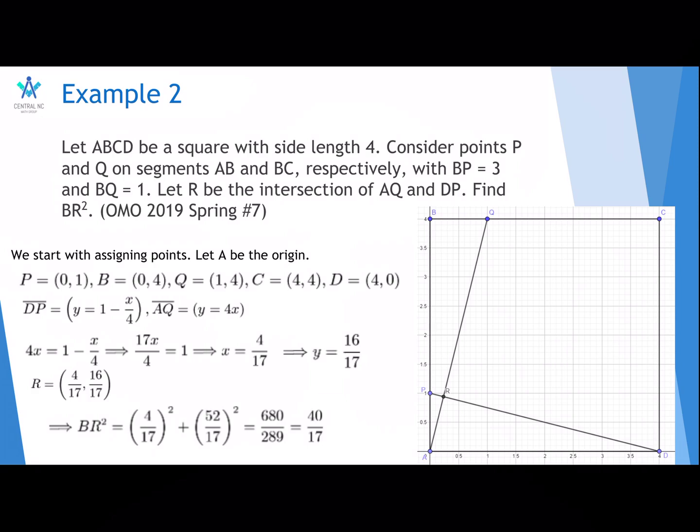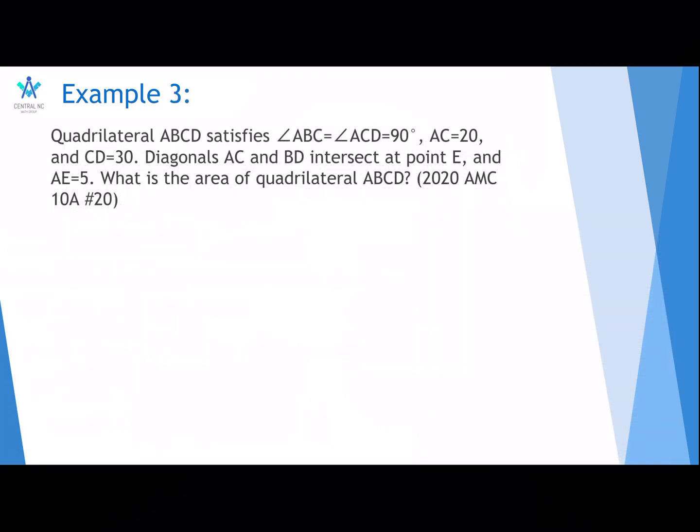So, the point R has the coordinates (4/17, 16/17). So, BR squared, you use distance formula squared, so you get 4/17 squared times 68 minus 16, which is 52/17 squared. That's 680/289. And you can cancel the 17 on the top and bottom and get 40/17.